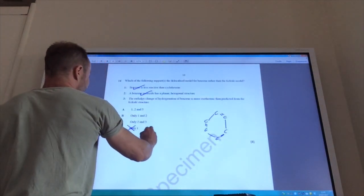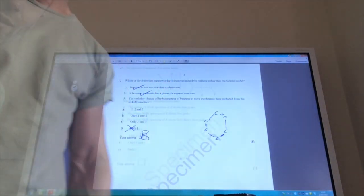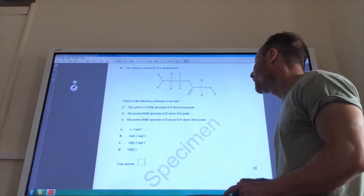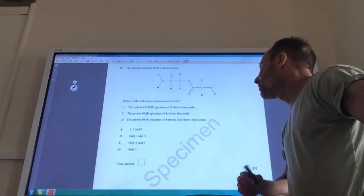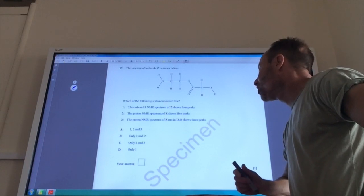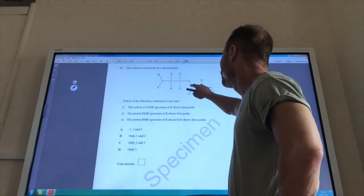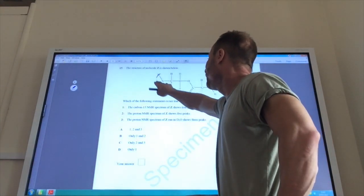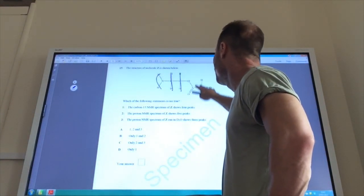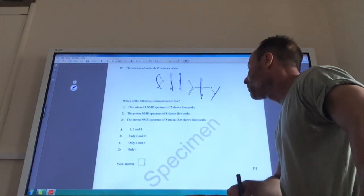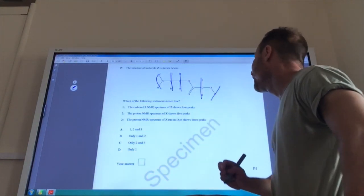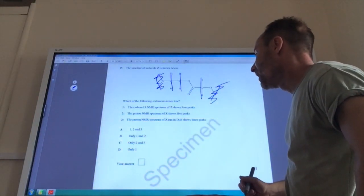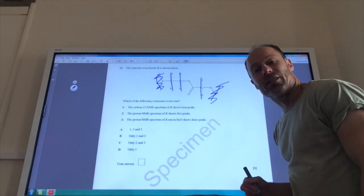And then finally, for multiple choice, we've got this molecule Z shown below. Which of the following statements are true? So, the carbon-13 NMR shows four peaks. One, two, three, four. Yeah, that's right. Proton shows five peaks. One, two, three, four, five. Yeah, that's true. The proton NMR in D₂O shows three peaks. That's correct because in D₂O, that one would disappear and that one would disappear. So, that would be three peaks. So, therefore, all three statements are correct and the answer is A.